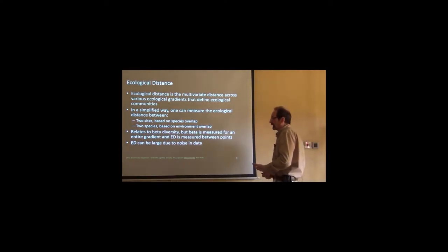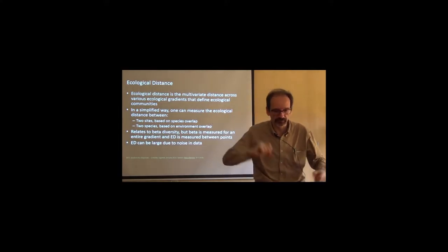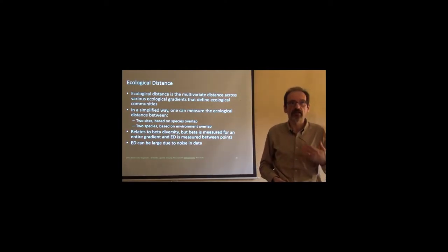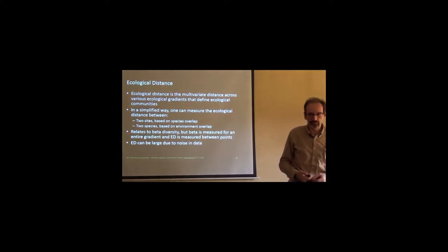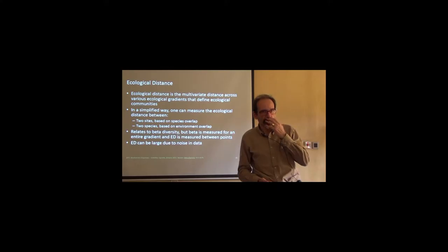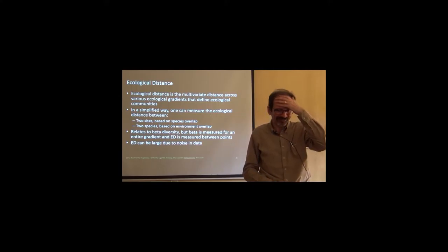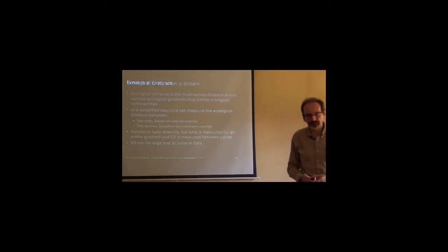This relates, obviously, to beta diversity, but beta is measured for the entire gradient, and ecological distance is something that you measure between two given samples, sample A and sample B. However, ecological distance can be very large if you have a lot of noise in your data. And, in biology, you have noise all over. The signal-to-noise ratio, when we try to look at the signal in ecology, tends to be extremely low. Palmer has given a very comprehensive account of ecological distance, if you want to look at that, but now that I think of it, I forgot to put that paper on the keyboard.